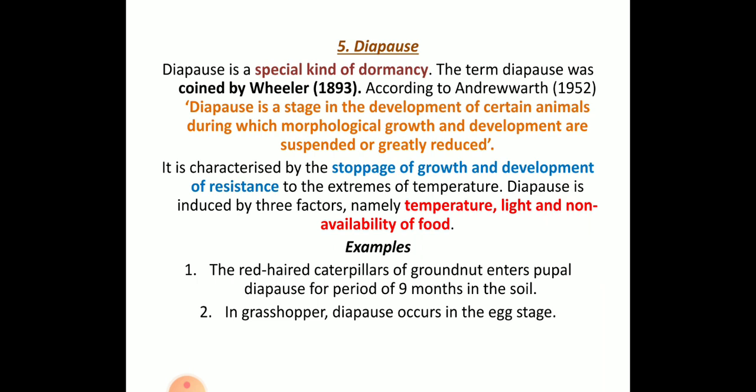Diapause is a special kind of dormancy — it is a stage in the development of certain animals during which morphological growth and development are suspended or greatly reduced. The characteristics are the stoppage of growth and development. Diapause is induced by three important factors: temperature, light, and non-availability of food. For example, the red-eyed caterpillar of groundnut enters diapause during the pupal stage for around nine months, while in the grasshopper, diapause occurs at the egg stage.